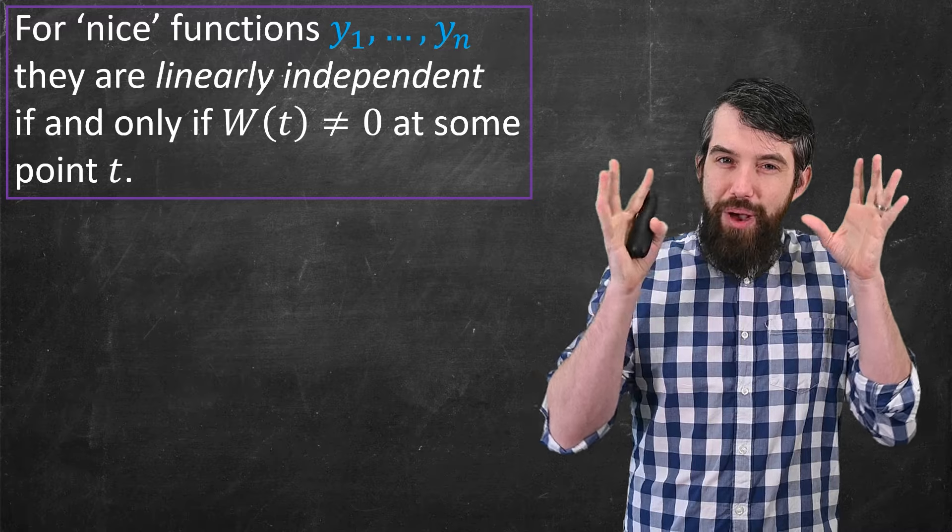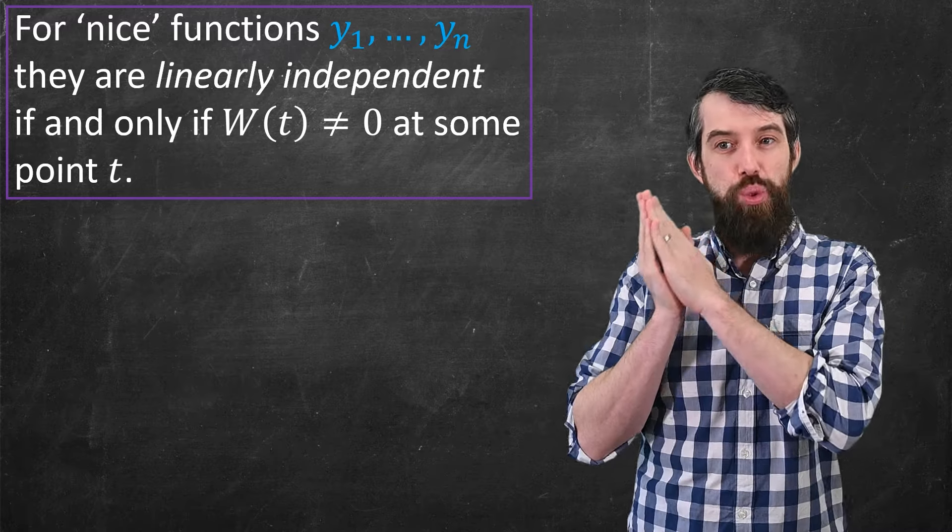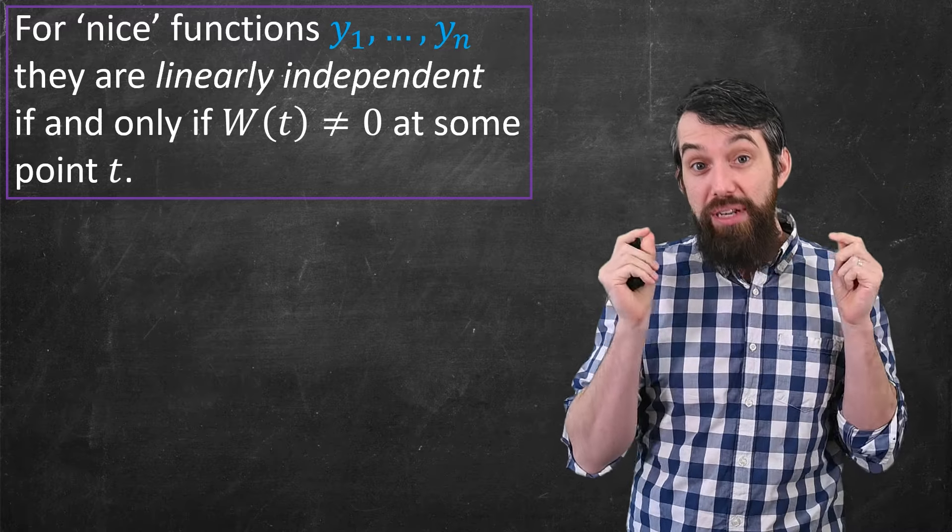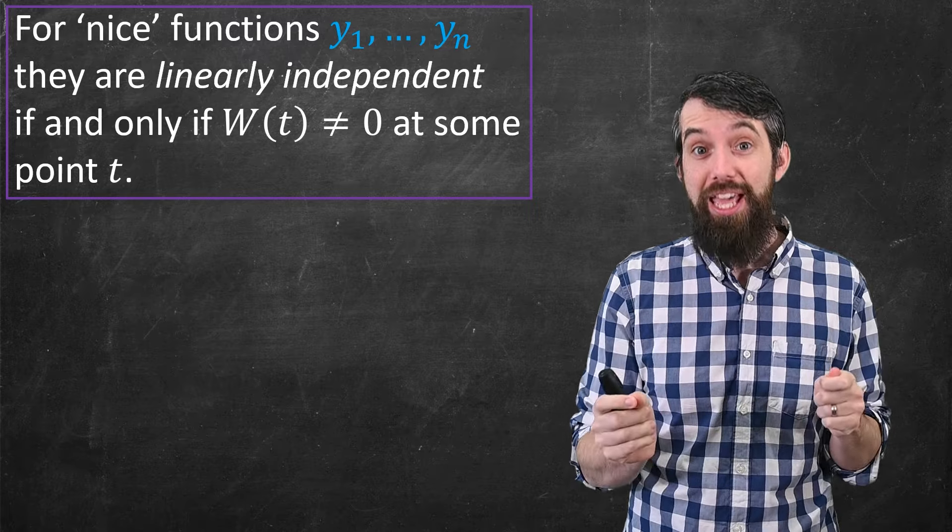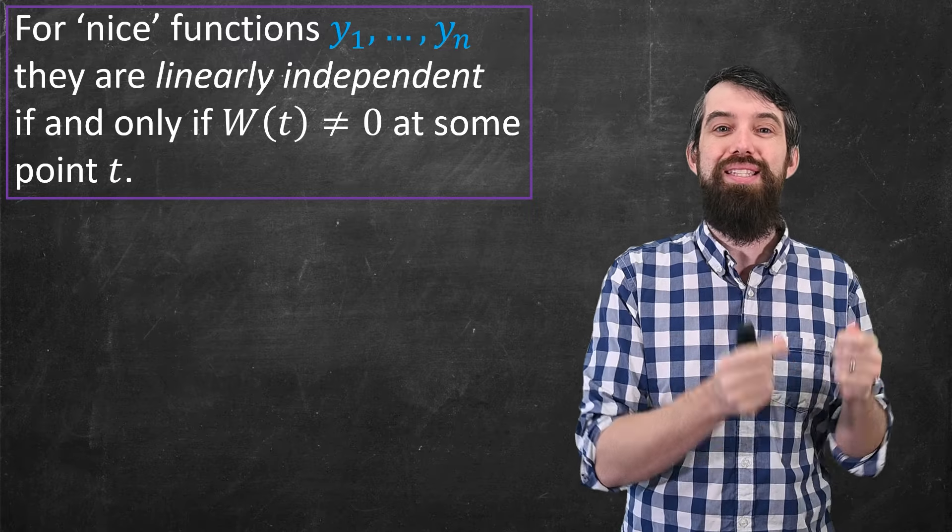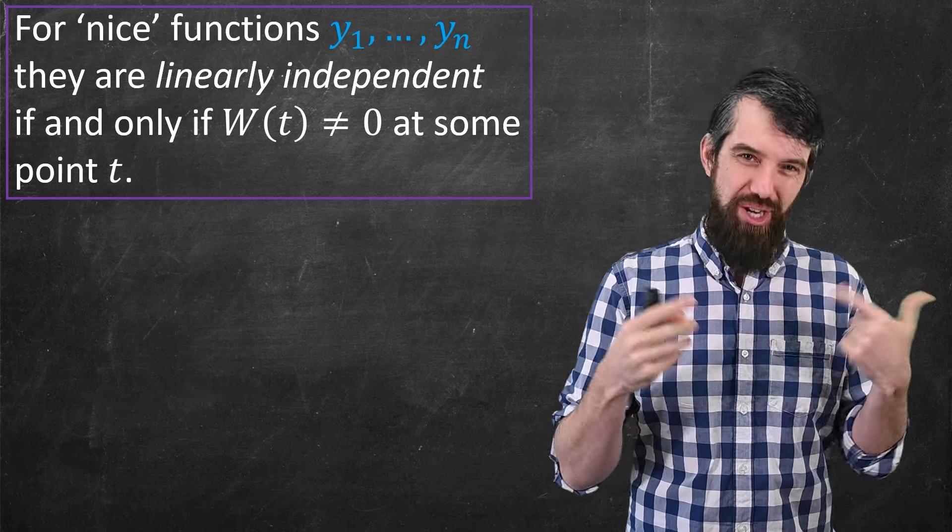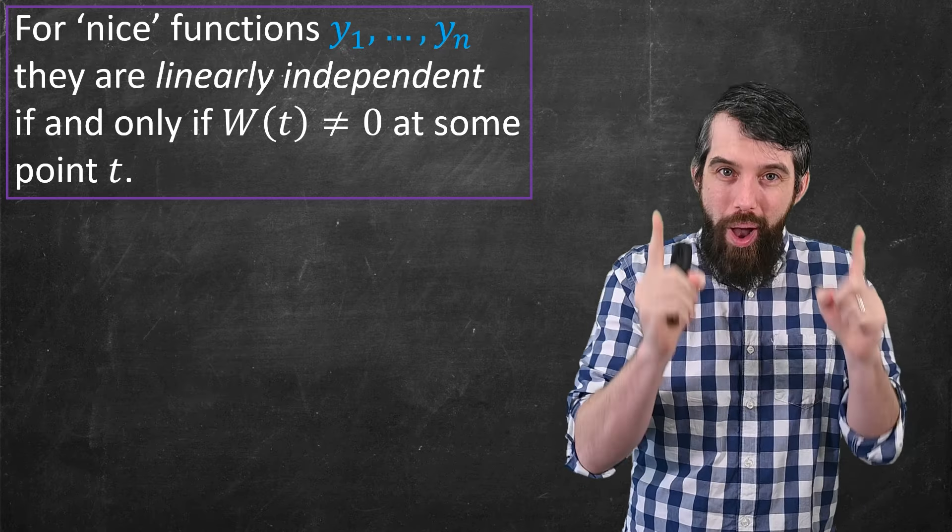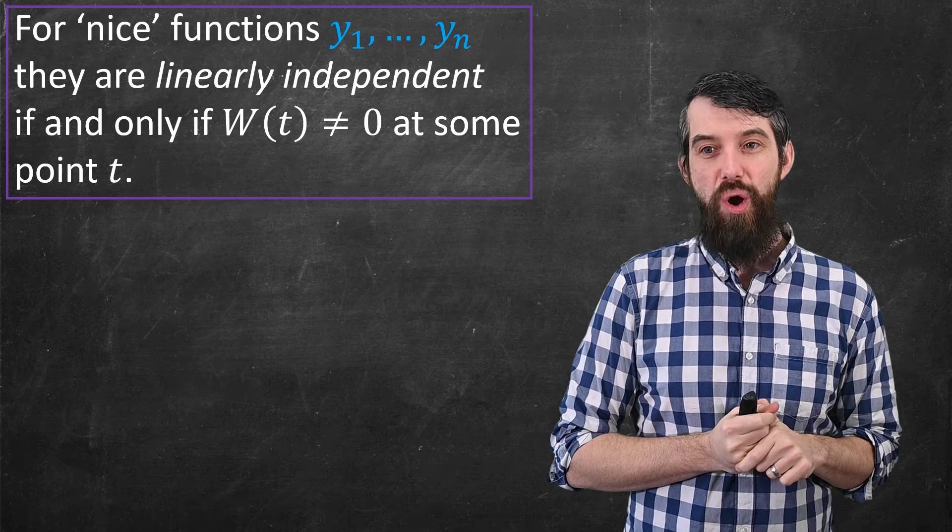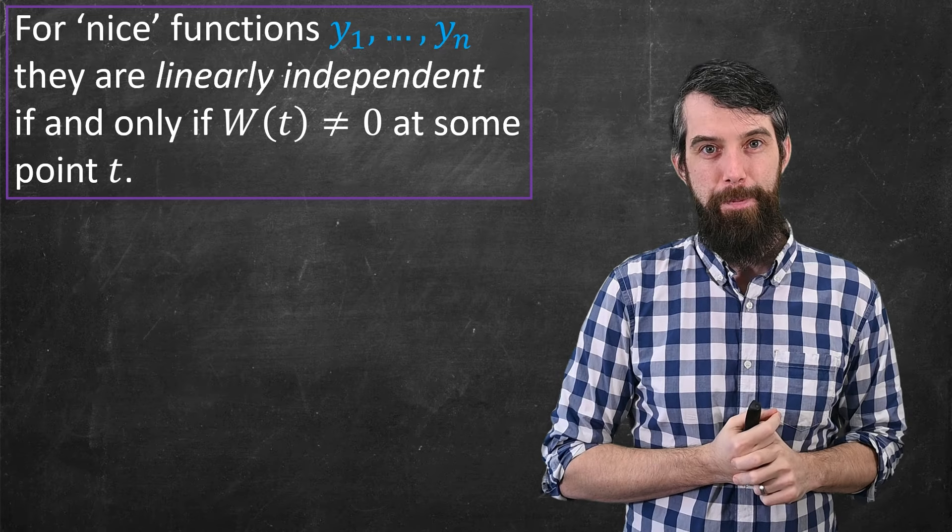And indeed, the general property is true that if you have linearly dependent functions, the Wronskian is going to be identically equal to zero. And in fact, as long as our functions are nice enough, you get both directions being true.